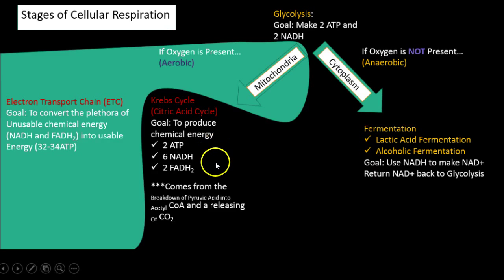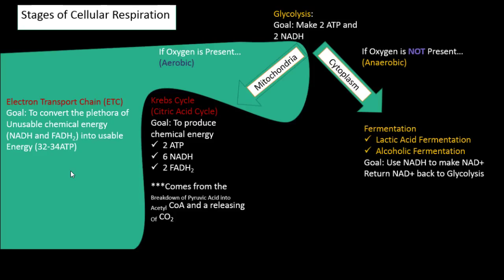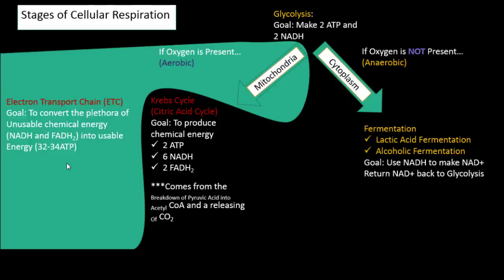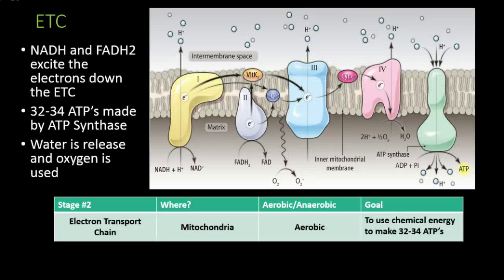We got a lot of chemical energy from the Krebs cycle, and that chemical energy came from the breakdown of pyruvic acid and the releasing of carbon dioxide. Our last reaction in cellular respiration is the electron transport chain. In a plant, the electron transport chain made high-energy electron carriers that fed into the Calvin cycle. In respiration, the electron transport chain is where we produce the most ATP. This is a picture of the electron transport chain in the membrane of a mitochondria.